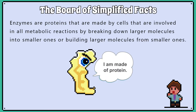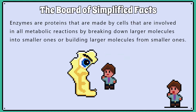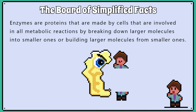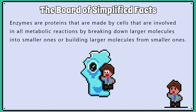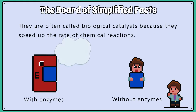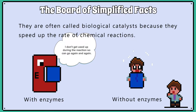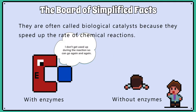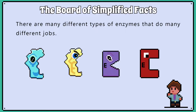Enzymes are proteins that are made by cells and are involved in all metabolic reactions, by breaking down larger molecules into smaller ones or building larger molecules from smaller ones. They are often called biological catalysts because they speed up the rate of chemical reactions. There are many different types of enzymes that do many different jobs.